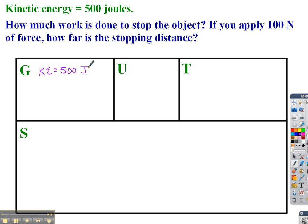And then we know something. Looking at this question here, how much work is done to stop the object. We know if the kinetic energy of the object is 500 joules, then 500 joules of work is done to stop the object. So I'm going to write that as a given as well, just to remind myself of that relationship between work and kinetic energy.